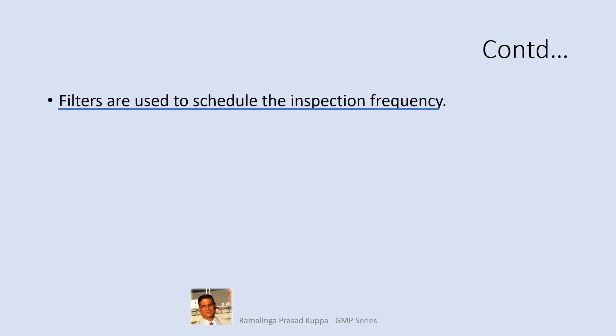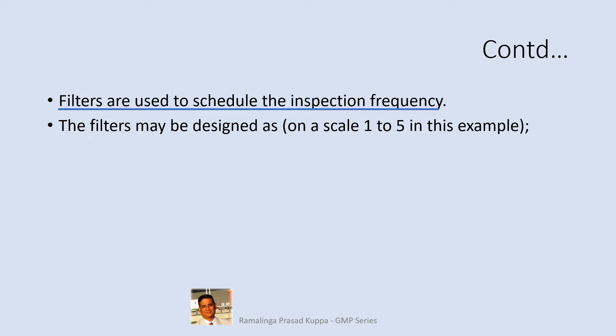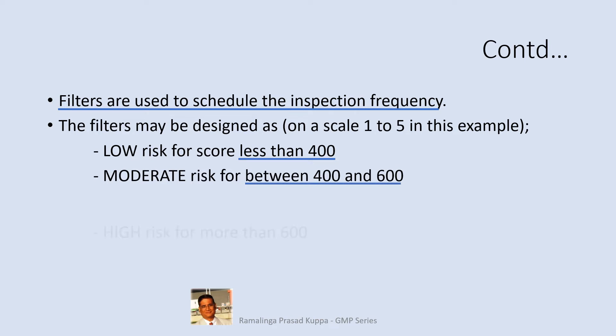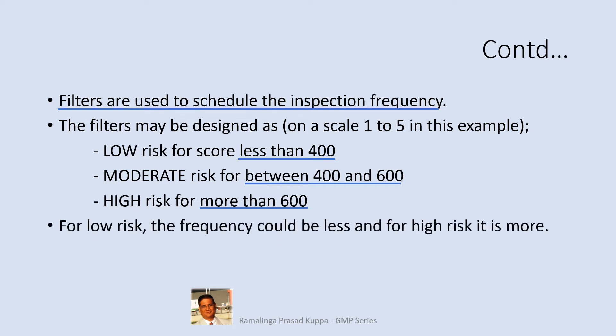Filters are used to schedule the inspection frequency. The inspection frequency may be decided based on the total calculated risk score. The filters may be designed as low risk for a score less than 400, moderate risk for between 400 and 600, and high risk for more than 600 — this is on a scale of 1 to 5. Accordingly, for low risk the frequency could be less, for high risk it is more, and for moderate risk an intermediate frequency may be assigned.